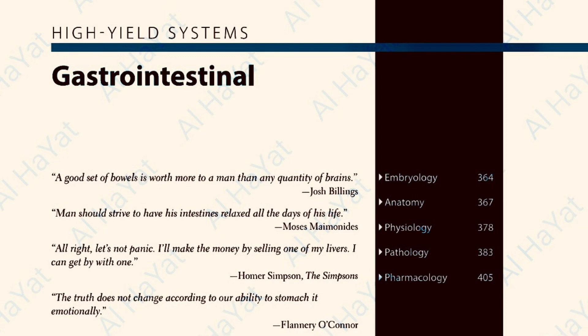Congenital umbilical herniation is caused by failure of the umbilical ring to close after physiologic herniation of the midgut, and is covered by skin. The hernia protrudes with increased intra-abdominal pressure such as crying. It may be associated with congenital disorders including Down syndrome and congenital hypothyroidism. Small defects usually close spontaneously.